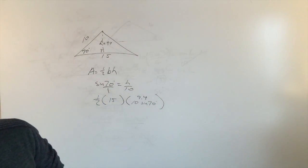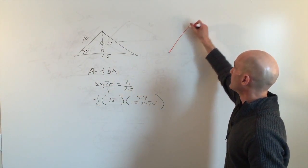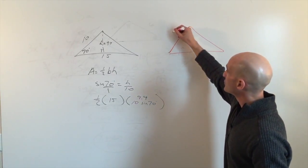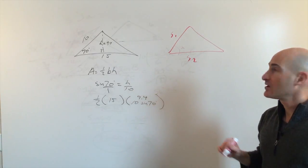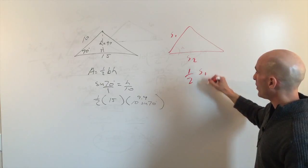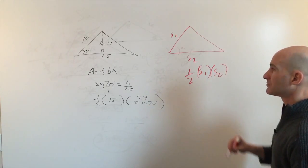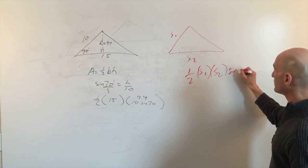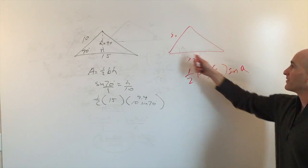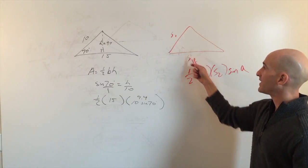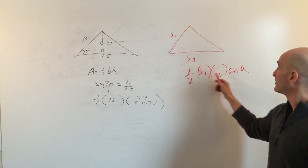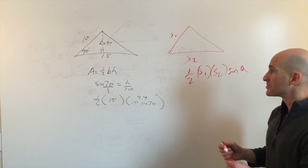If you know angle A and the two sides surrounding it — call them side 1 and side 2 — the area formula becomes: one half times side 1 times side 2 times the sine of the included angle. The included angle is the one between those two sides.